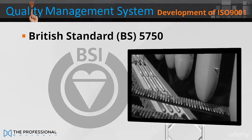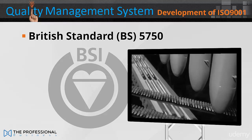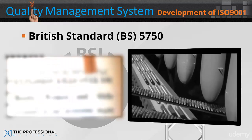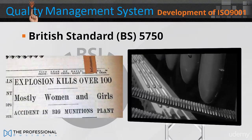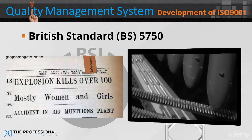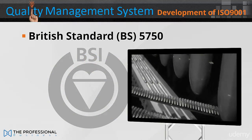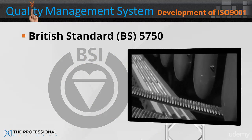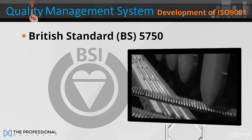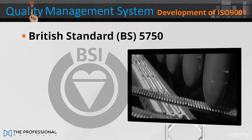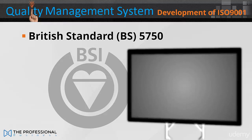During World War II there were many quality problems in British industries, such as munitions, as bombs were actually exploding in factories as they were being assembled. The solution adopted to address these quality problems required factories to document their manufacturing procedures and approved by record keeping that the procedures were being followed. This type of standard was known as a management standard because it specified not what the manufacturing was, but how the manufacturing process was being managed.